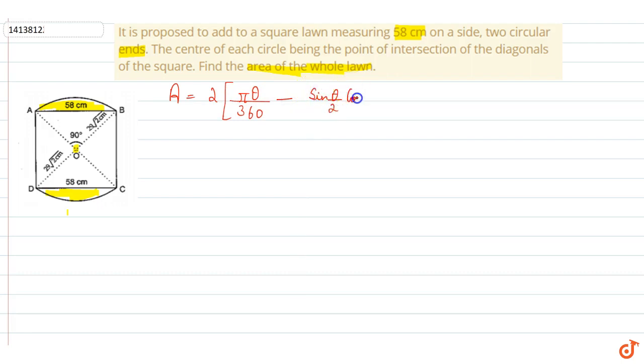Here, we have theta 90 degrees. And we have radius square. Radius is 29√2 cm. How much is it? Because it's 58, we can do diagonal at this point.